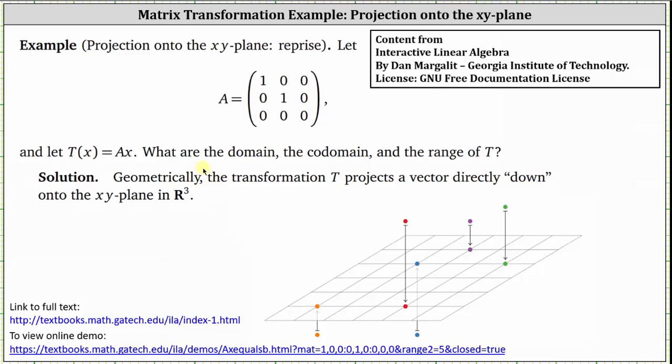This video shows the matrix transformation that is a projection onto the xy plane. If we let matrix A be the given three-by-three matrix and define the transformation as t of x equals A times x, we're asked what are the domain, the co-domain and range of t.